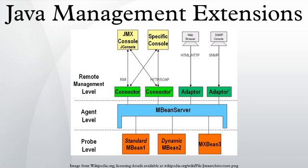JMX is also supported by servlet containers such as Apache Tomcat and Jetty. MX4J is open source JMX for enterprise computing. JManage is an open source enterprise-grade JMX console with web and command line interfaces. MC4J is an open source visual console for connecting to servers supporting JMX. SNMP Adapter 4J is an open source tool providing simple access to MBeans via the SNMP protocol.